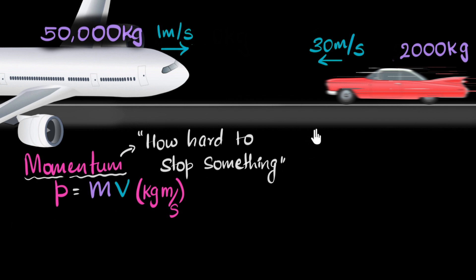So let's first do the momentum of the aeroplane. I'm gonna call it Pa, A for aeroplane. That's going to be the mass of the aeroplane, which is 50,000 kilograms, so 50,000 kilograms, times the velocity of the aeroplane. That's going to be one meter per second.